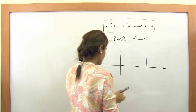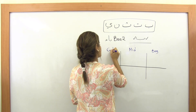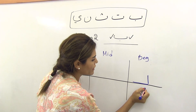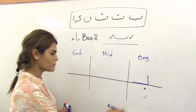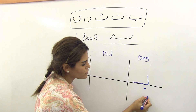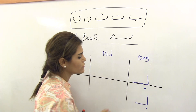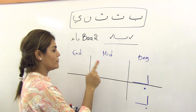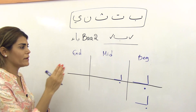At the beginning of a word, letter Ba looks like this — I'm writing in big handwriting but in an actual word you'd write it smaller. It goes from the top down and left, just a corner, and the dot goes below. You can put it exactly on the corner or a little to the left, but not to the right side. This beginning form is the same in the middle of a word.